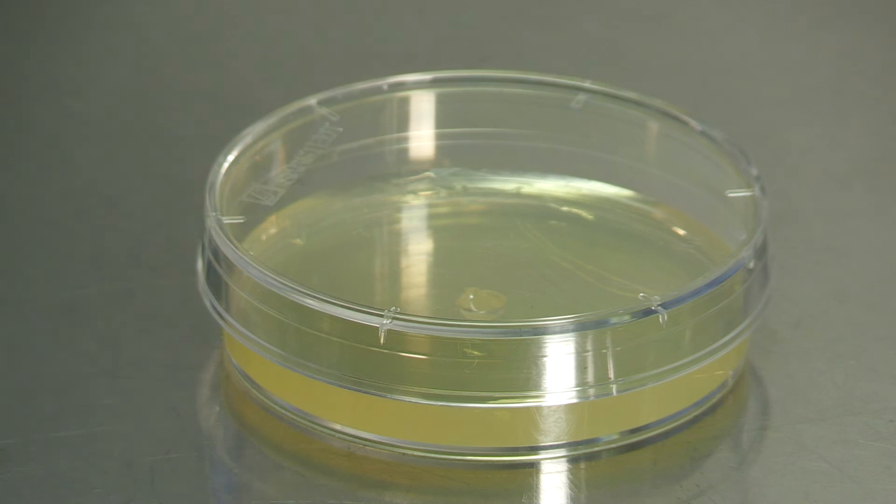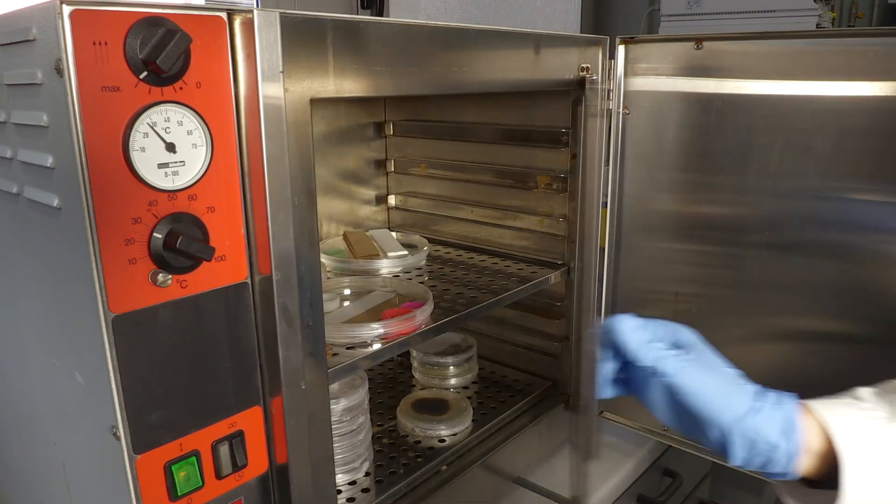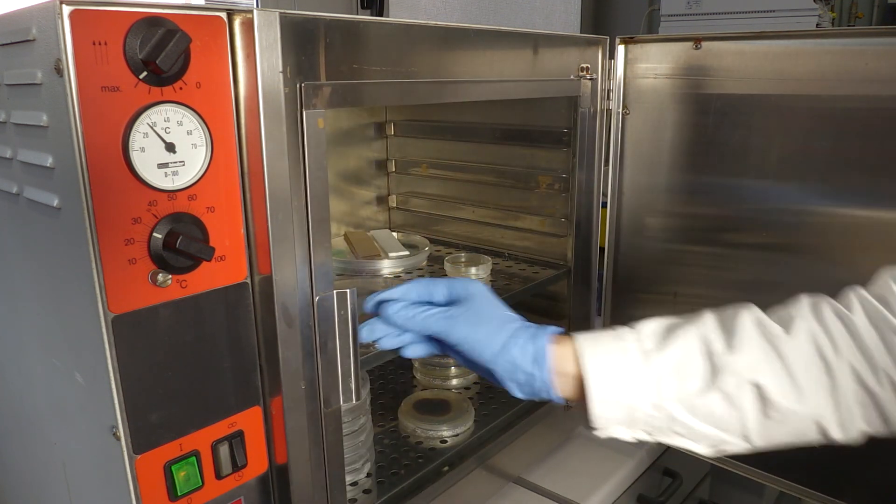The Petri is then sealed and incubated at 27 degrees Celsius for a time period depending on the microorganism species selected for experimentation.